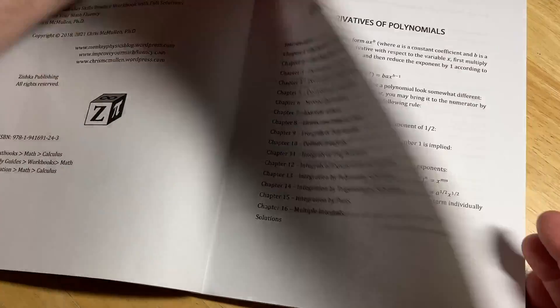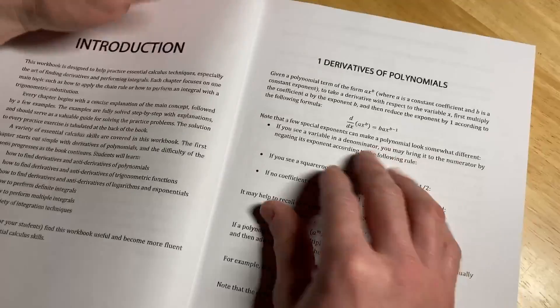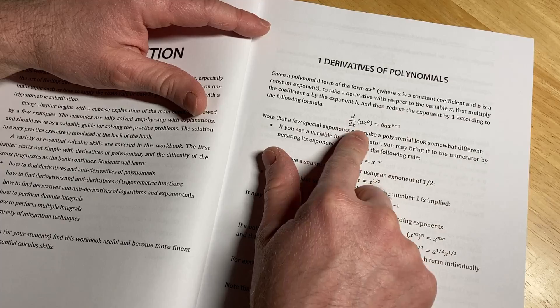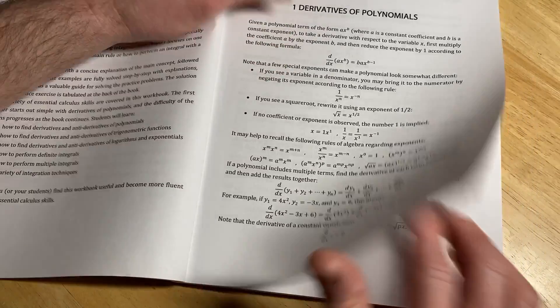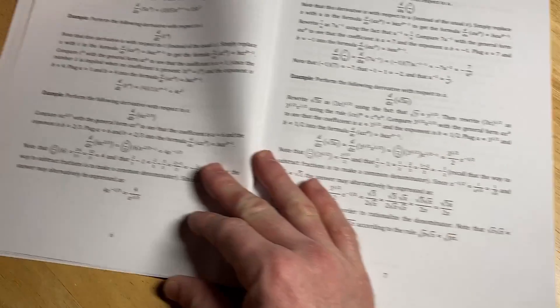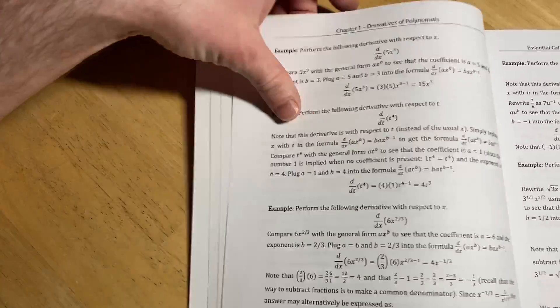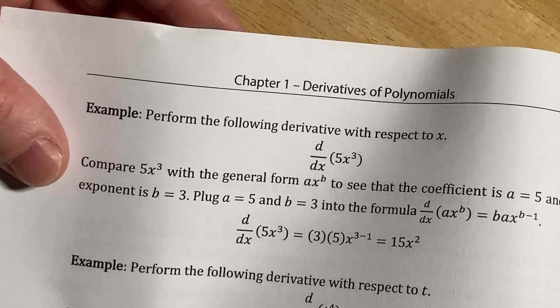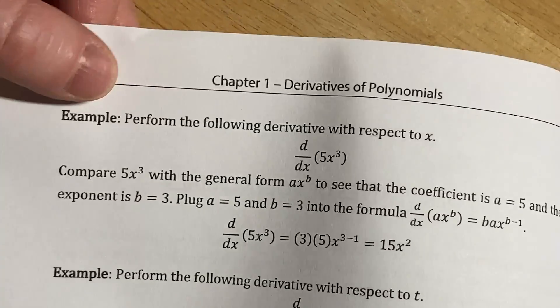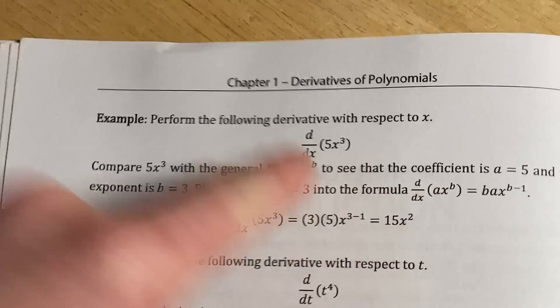So let's check the beginning so you can see if you're ready for this book. So here he starts with the first formula and then he gives you some examples. Okay, and then here's an example here. Let's take a look at this one. Let's take a look at this. It says here, perform the following derivative with respect to x.